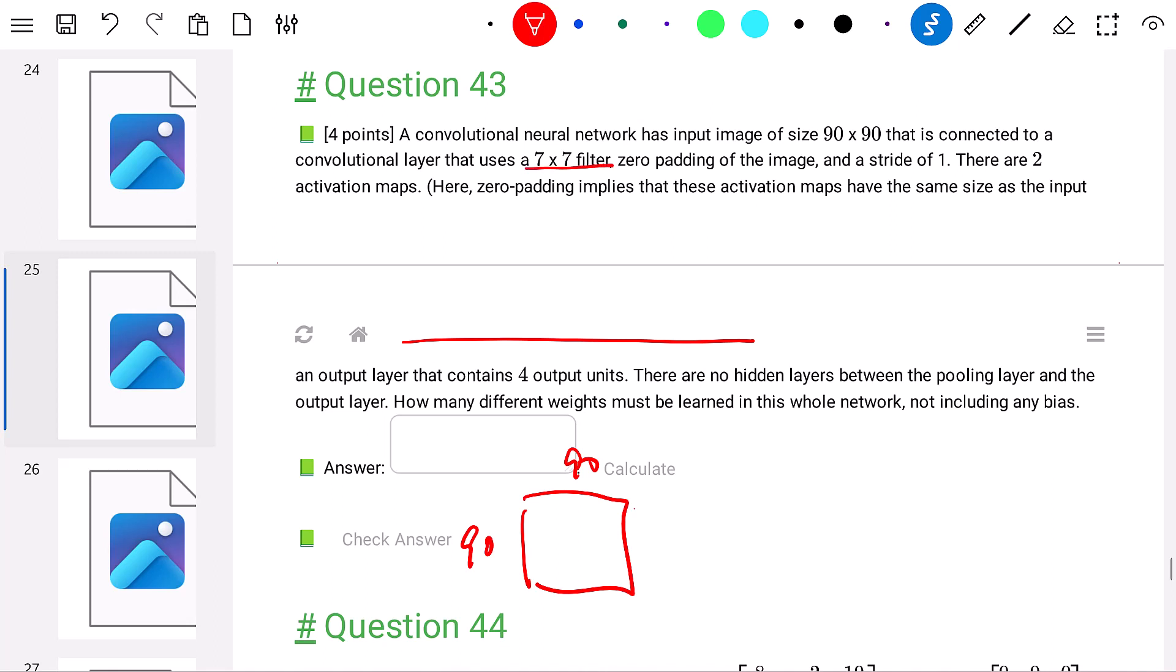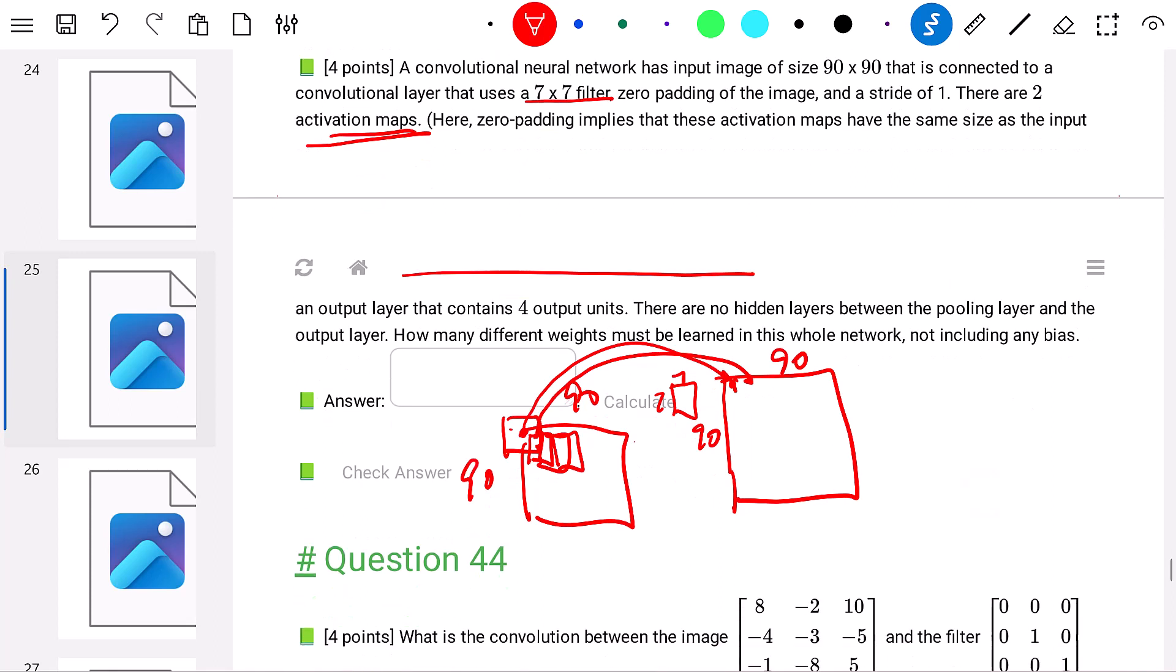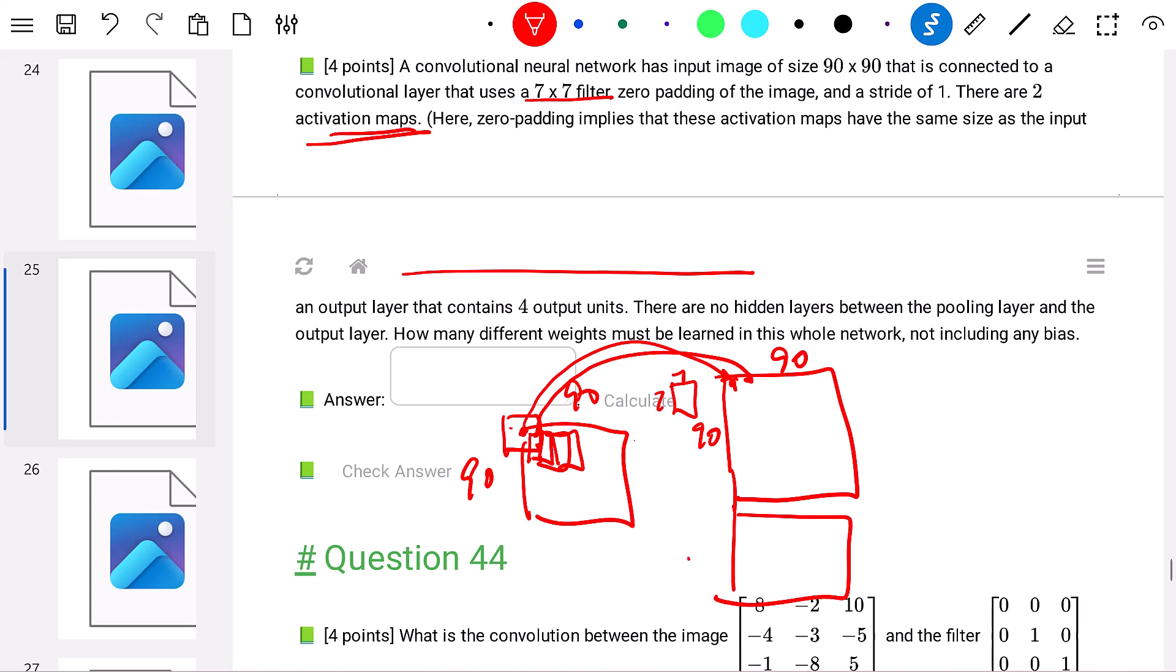In the first layer, it's a 7 by 7 filter. We have these small 7 by 7 filters that just move around the image. When centered at each position, it generates one number as the activation. If you look at the top left corner pixel, put a 7 by 7 filter around it and pad zeros around the image, then we get one number here. Each number is mapped to another number. In particular, this activation map, there are two of them. Each of these activation maps will have size 90 by 90.